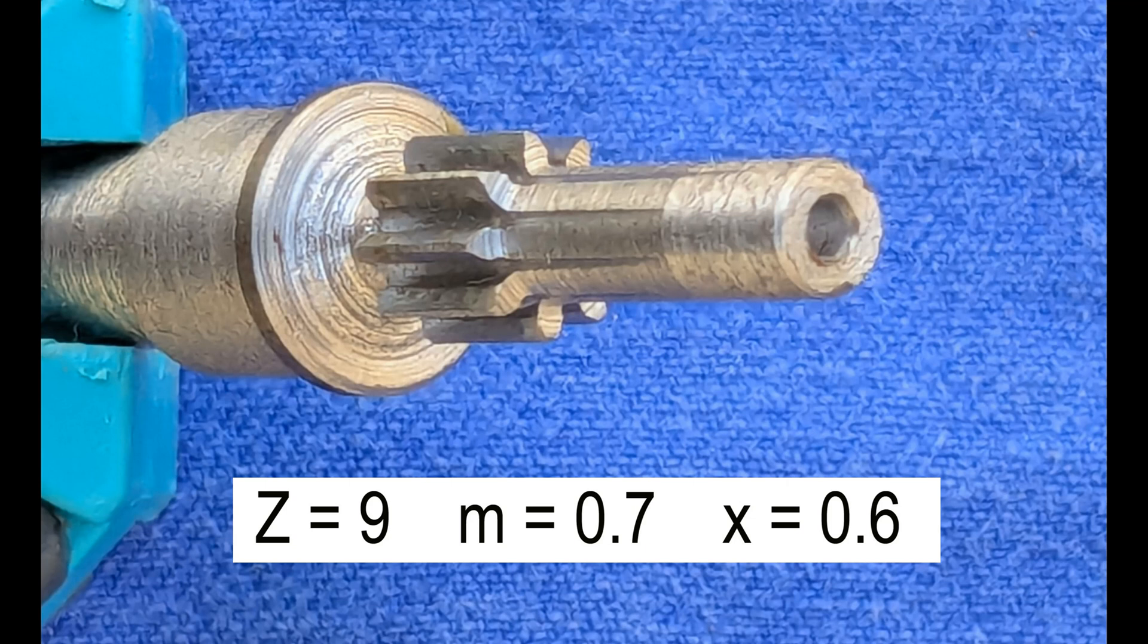This photo showing a 90 tooth module 0.7 pinion cut near a shoulder.